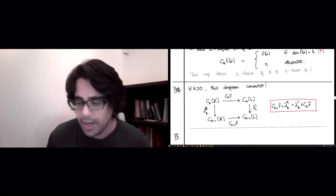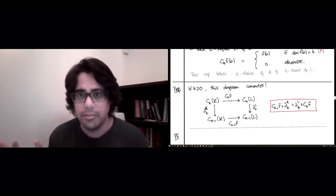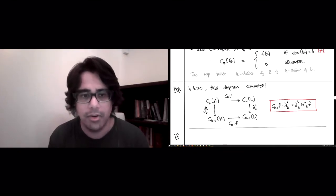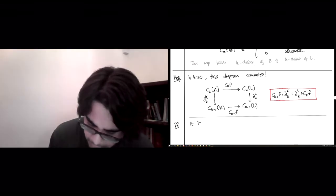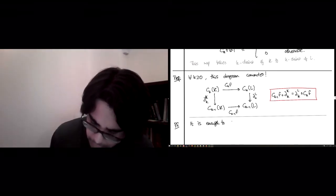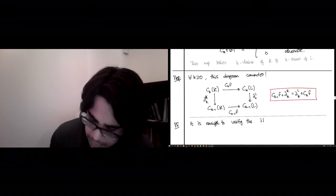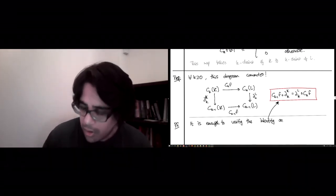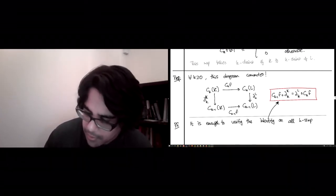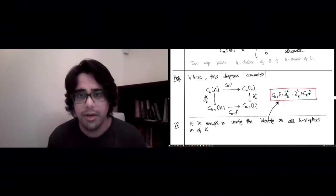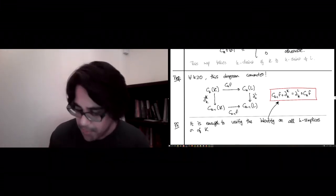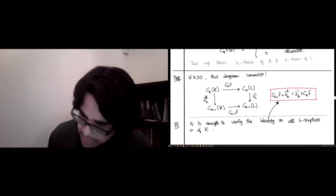Because the map c_k(f) is defined in such a piecewise fashion, it takes two completely different branches depending on whether a dimension of f(σ) equals k or not. This proof has to be done in two cases. So the point is that it is enough to verify the identity, and by identity I mean this red box, on all k simplices σ_k. Because again, they form a basis. And if two linear maps agree on every basis element, then they must be the same map.